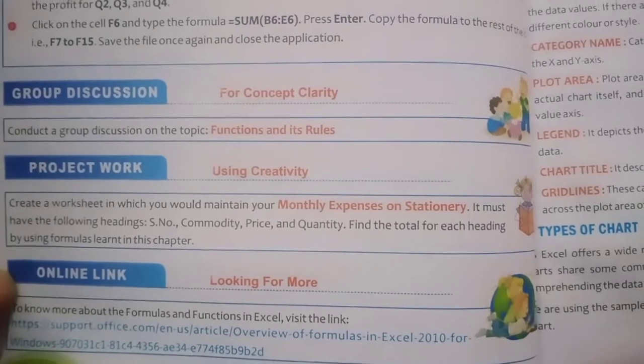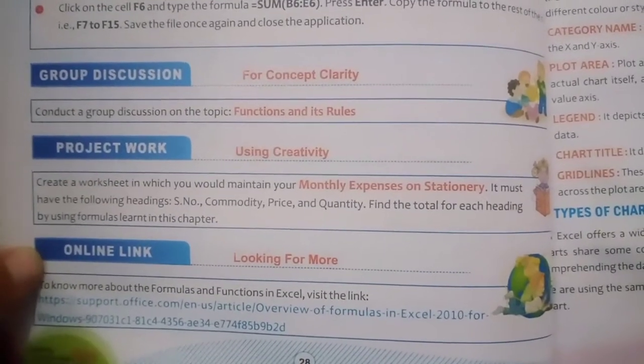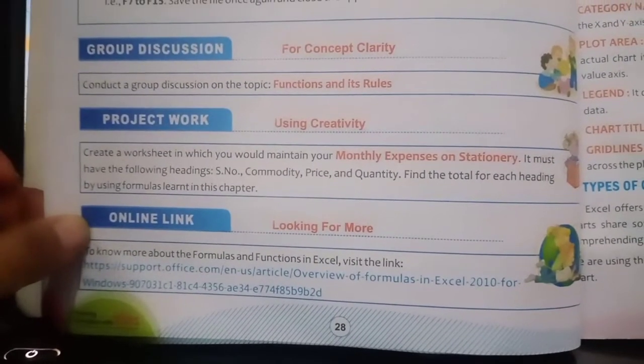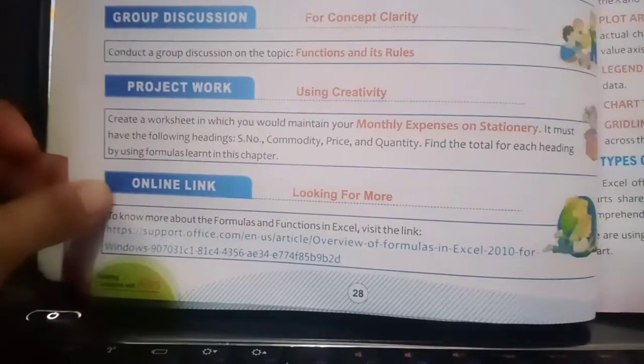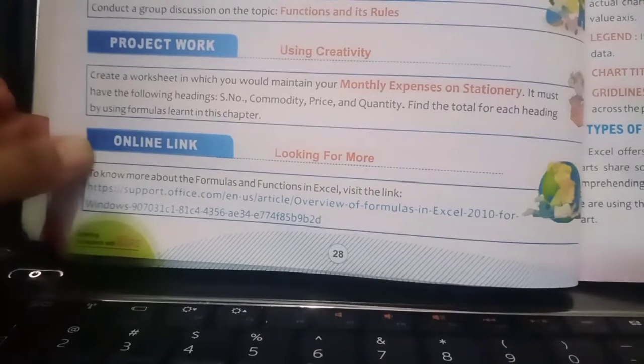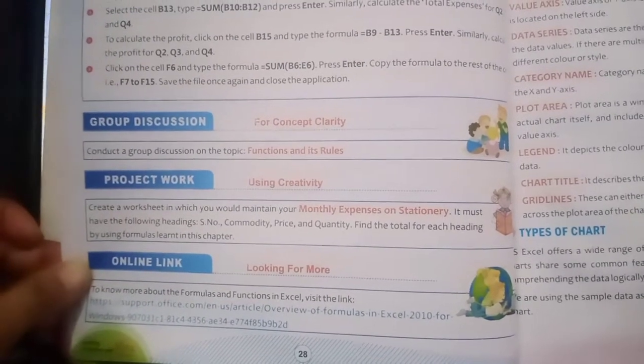To find the total, multiply price by quantity. There is a multiply function MUL — like SUM, write MUL, open bracket, then the cell numbers of price and quantity with a multiply sign (star sign, which is Shift+8 on the keyboard). At the end, find the total expenses by adding all the individual totals. I will show you the multiply function — how to use it.